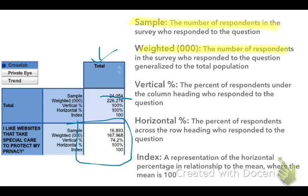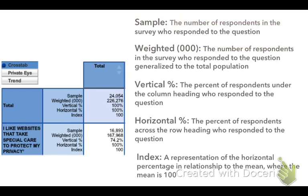This is represented by the weighted number. In this case, the total population is 226,276,000. One important thing to note: there are three zeros next to that weighted designation, which means the number is represented in thousands — so you have to add those three zeros to the end. The weighted population is not 226,276 — it is actually 226 million. That's a very important point to remember.